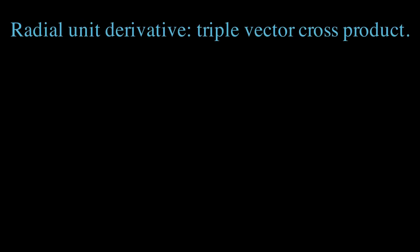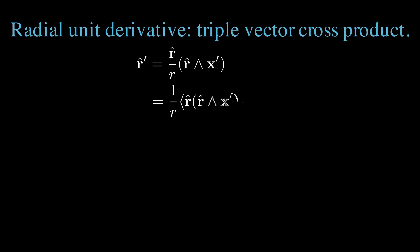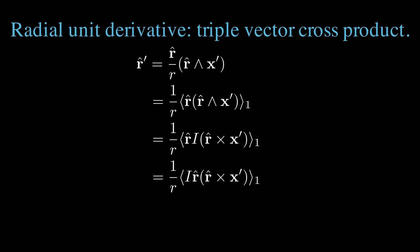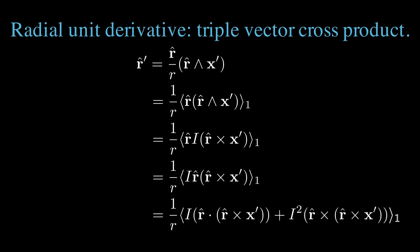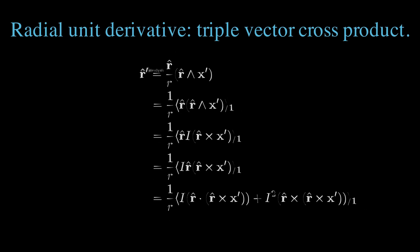We can expand r̂ prime as a conventional triple vector cross product. We start by taking the vector r̂ times the wedge product and applying a grade-one selection. As this is a vector in the first place, it doesn't change the result. We then expand the wedge product as i times the cross product, commute the i, and expand the geometric product of r̂ with a vector as dot product plus i times the cross product. The dot product term is a scalar multiplied by a pseudoscalar, which is grade three, so the grade-one selection of that term is zero. We're left with just the triple cross product, incorporating the sign of i squared equals minus one into the order of that cross product.